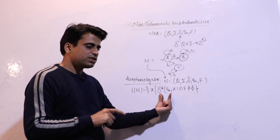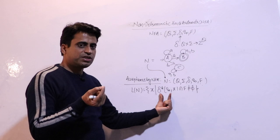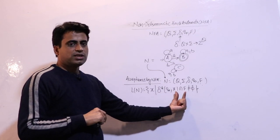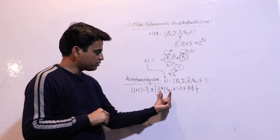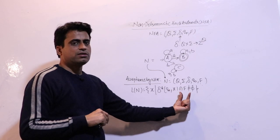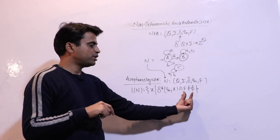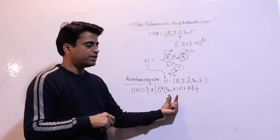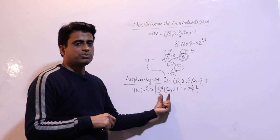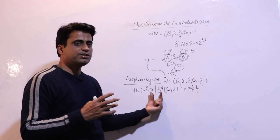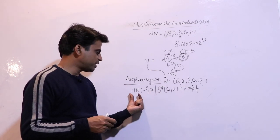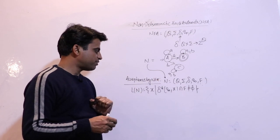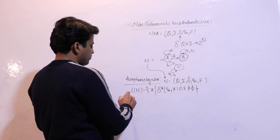How do we know if at least one state is a final state? Take the intersection of the output states with F. If something is common, it means a final state is present, so the intersection is not equal to phi. And the common element will be the final state — so the input is accepted. A collection of such strings is called a language L corresponding to this NFA.